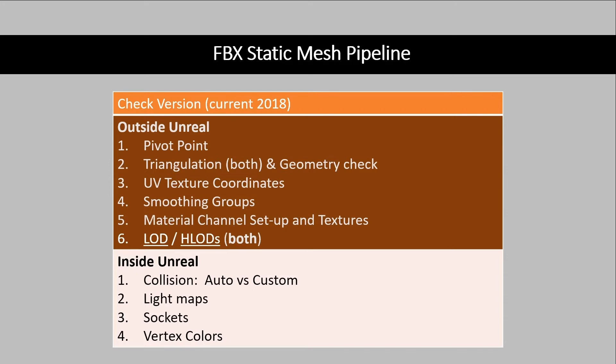Here's a typical workflow. Outside of Unreal, you can set the pivot point, do triangulation and geometry checks, set up your UVs, your smoothing groups, set your material channels and set up textures, and also specify your levels of detail. HLODs now are more of a thing inside of Unreal. Inside of Unreal, you set up your collisions, light maps are typically auto-set, you can specify sockets and do vertex colors. There will be a whole separate chapter on pipelines and collaboration, so this is a great starting point and we'll move on to accelerating this in a further chapter.